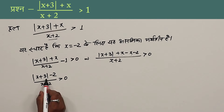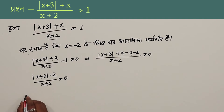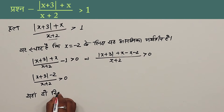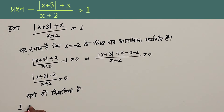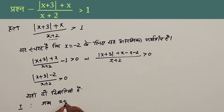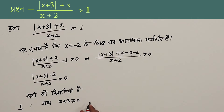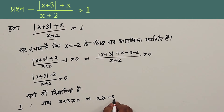There are two cases to consider. First, when mod of (x+3) is greater than or equal to 0, meaning x is greater than or equal to minus 3.